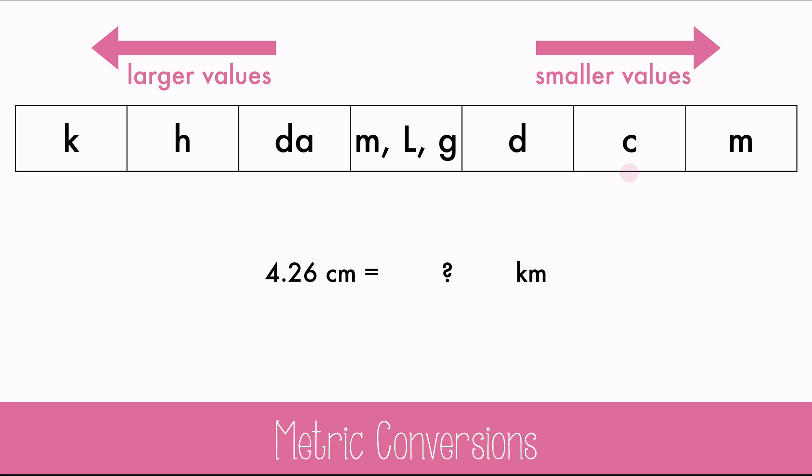Start at centi, and move one, two, three, four, five places to the left. Move the decimal the same direction the same number of times, and you get 0.0000426 kilometers. It's good to do a logic check and see if your answer makes sense. 4.26 centimeters is a very small measurement already, so it makes sense that it would be an extremely small fraction of a kilometer.